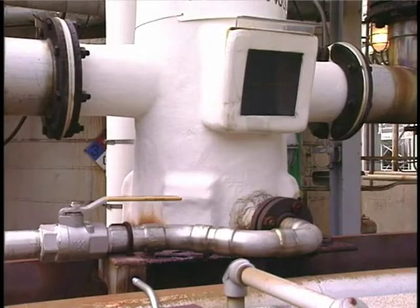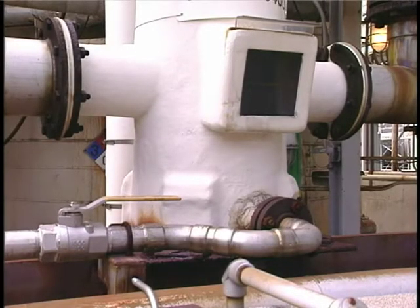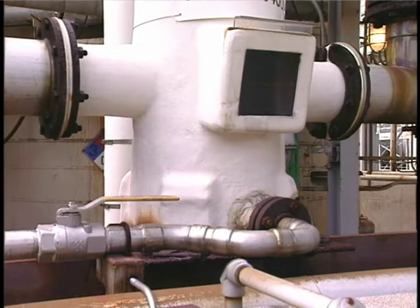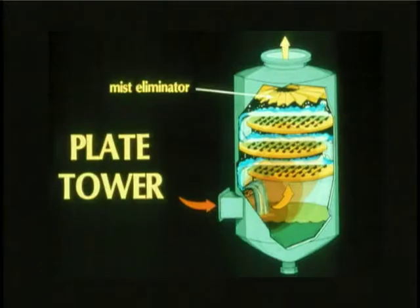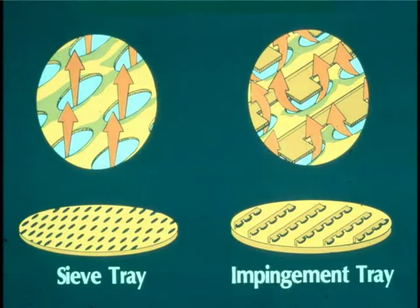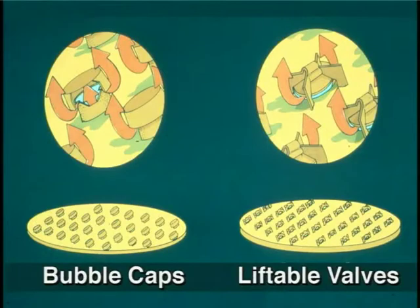Tray scrubbers are vulnerable to solids accumulation and plugging problems. Regardless of the tray design, all of these units operate in a similar manner. The contaminated gas stream enters at the bottom and flows upward through the holes in the plates. The liquid enters at the top of the tower, flows across the tray and then through a downcomer to the tray below until it reaches the bottom of the tower. The function of the trays is to disperse the liquid into droplets and the gas stream into bubbles, creating the gas-liquid contact necessary for particle collection.